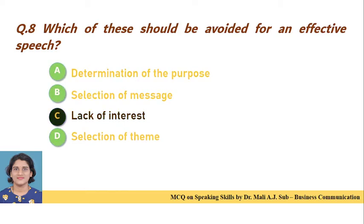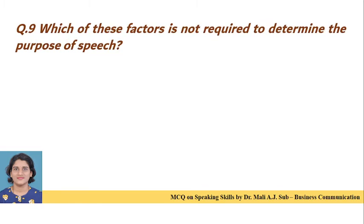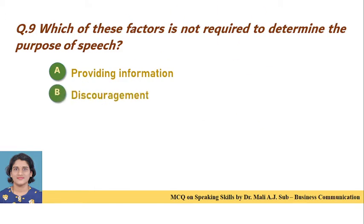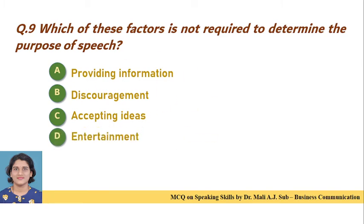Question 9: Which of these factors is not required to determine the purpose of speech? Option A: providing information. Option B: discouragement. Option C: accepting ideas. Option D: entertainment. Correct answer is Option B — discouragement is not required to determine the purpose of speech.